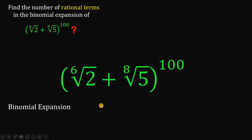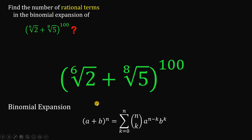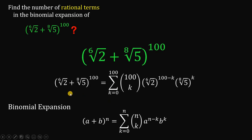First, we're going to use the binomial expansion. The binomial expansion states that if we have (a + b) raised to the power of n, it is equivalent to the sum from k equals 0 to n of n-choose-k multiplied by a raised to (n minus k) times b raised to k. Applying this to our expression, ⁶√2 plus ⁸√5 raised to 100 equals the sum of 100-choose-k multiplied by (⁶√2) raised to (100 minus k) times (⁸√5) raised to k, from k equals 0 to 100.